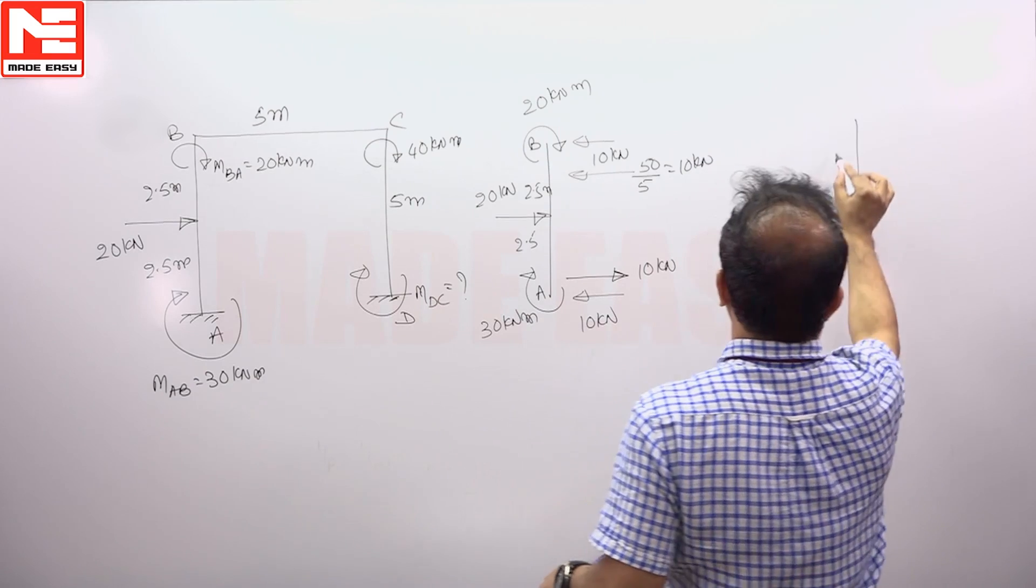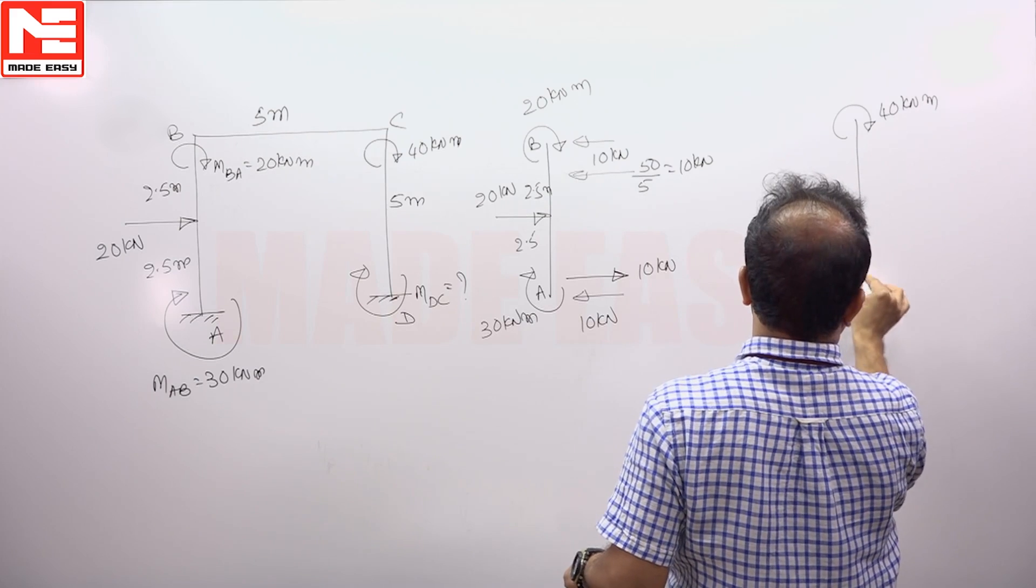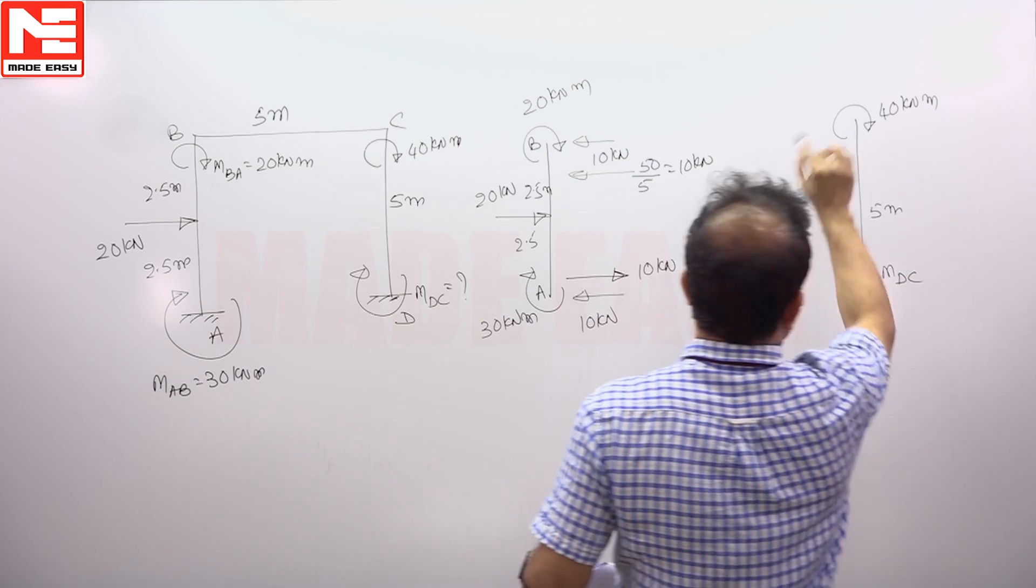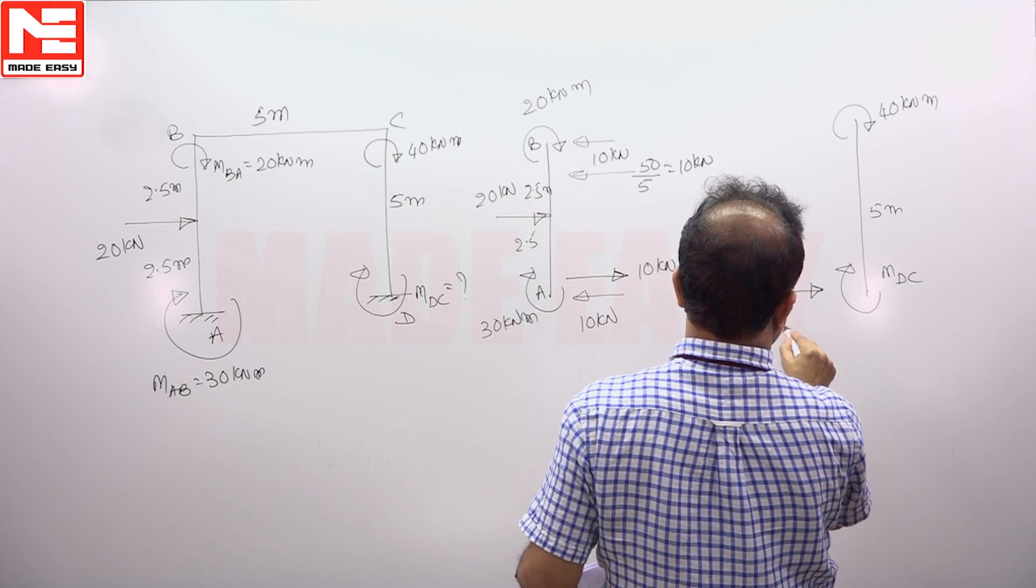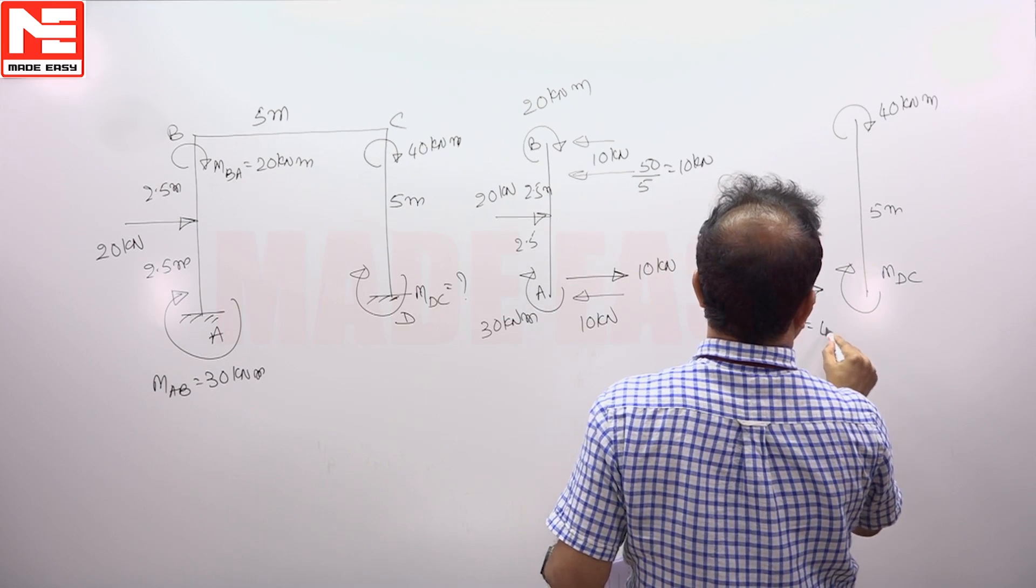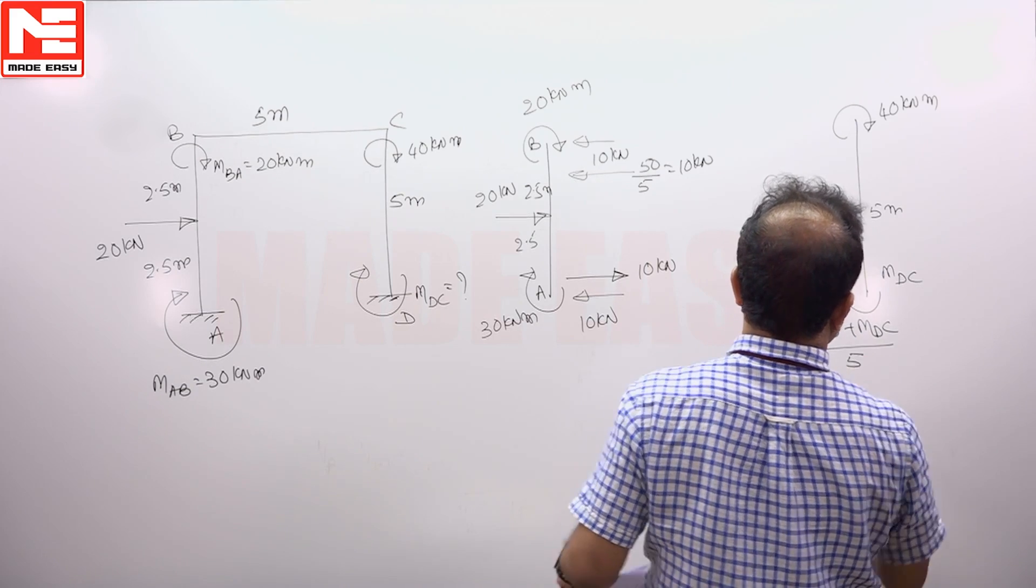Then here, 40 kilonewton meters, this is M_DC. Clockwise, so anti-clockwise. Horizontal reaction at D. 40 plus M_DC by 5.